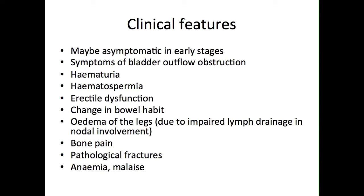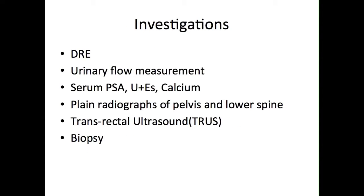The tumour can spread into the pelvic lymph nodes or haematogenously into the pelvis and spinal column. If there is metastatic spread, the average survival time from diagnosis is approximately two years. Following a digital rectal examination, a urinary flow measurement is carried out. Urea and electrolytes are carried out to assess renal function, while serum calcium levels may be affected if there are bony metastases present.